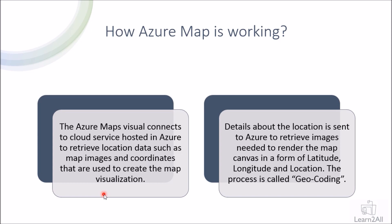The Azure Map Visual connects to a cloud service hosted in Azure to retrieve location data such as map images and coordinates used to create the map visualization. It passes data in the form of latitude, longitude, and location. This process is called geocoding. Whenever we add latitude or longitude on our Azure Map, it calls the cloud service hosted in Azure and retrieves the location data.